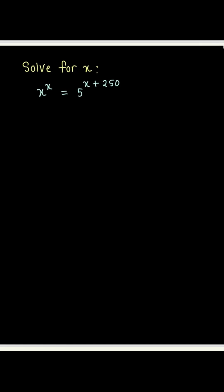In this problem, x is sitting at three places in the equation, and we are supposed to somehow find it. Now, this is not your average problem — it is actually quite a tricky problem. It may seem like we are doing random things here, but they won't be random. Everything that we will do will be to bring the left-hand side and the right-hand side in the same structural form. So let's see how it is done.